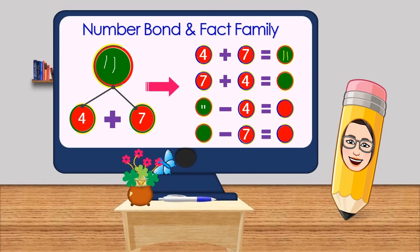Then 4 plus 7 is equal to - of course it's equal to 11, and 7 plus 4 is also equal to 11. So 11 minus 4 is equal to 7, and 11 minus 7 is equal to 4.